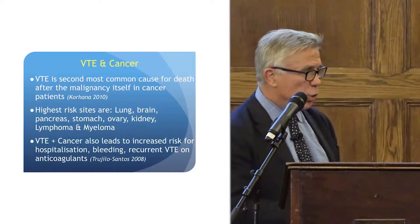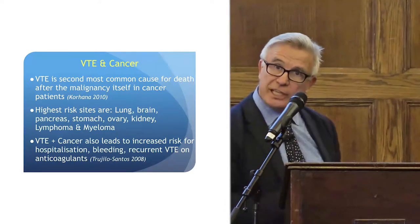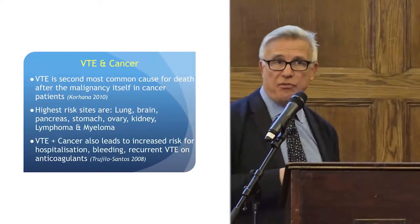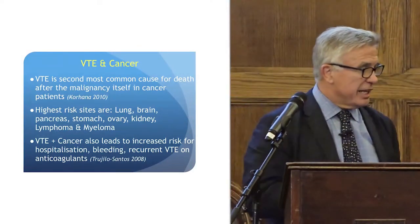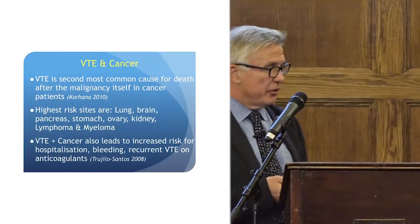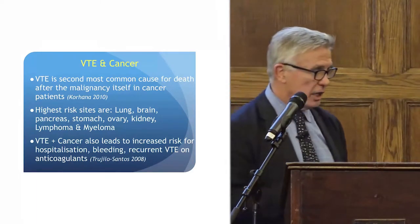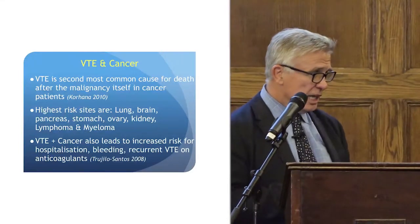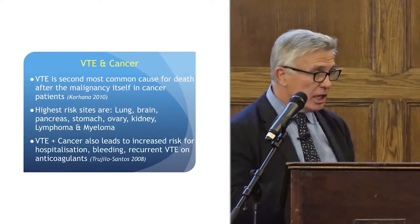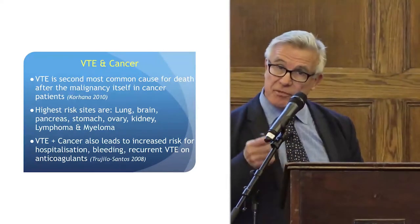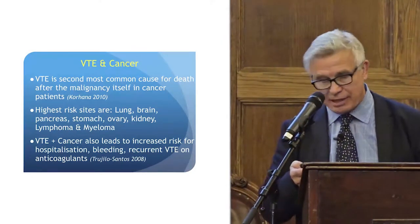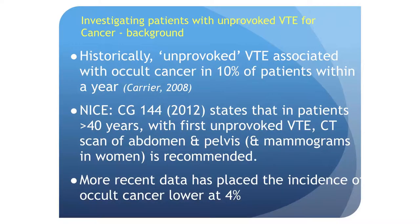VTE is the second most common cause of death after the malignancy itself in cancer patients. The highest risk sites are those of the pancreas and the stomach — the upper GI — but also the lung, the brain, the ovary and the kidney, and haematologically, lymphoma and particularly myeloma. VTE and cancer occurring together leads to an increased risk for hospitalisation, an increased risk for bleeding, and also recurrent VTE on anticoagulants.